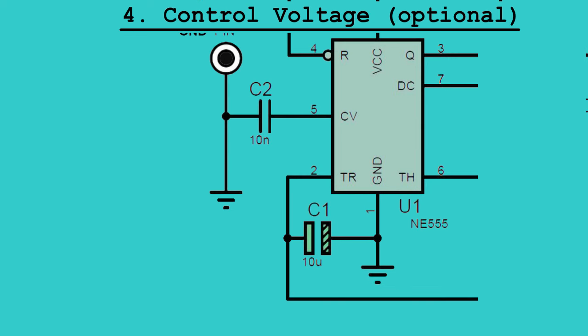Step 4: Control Voltage (Optional). You can leave pin 5 (control voltage) unconnected, or connect it to ground through a 10 nano-farad capacitor for stability.